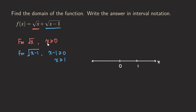For x greater than or equal to zero, we include zero, so we put a solid dot there — because there is an equal sign. Greater than zero means we shade the right side. So we take all values greater than or equal to zero, including zero itself.